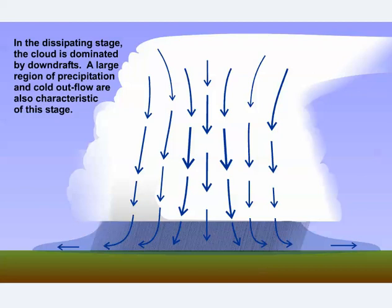But after about 10 minutes or so in the mature stage, the cell transitions to the dissipating stage, as the storm's cold pool expands and cuts off the updraft's access to buoyant, warm, moist air. As the updraft fades, the cloud becomes dominated by downdrafts in the dissipating stage, as the storm rains itself out and dies.